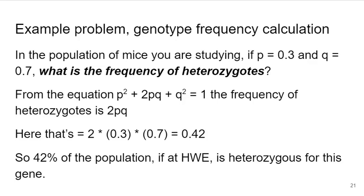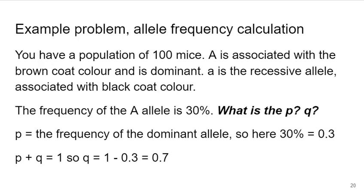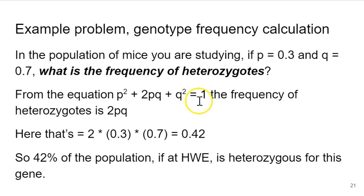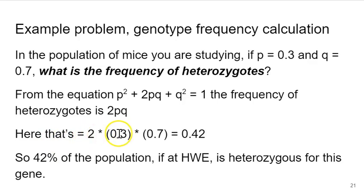Here's another example. Using the same population where P is 0.3 and Q is 0.7, what's the frequency of heterozygotes — big A little a — in that population? Since a heterozygote is a genotype, we use P squared plus 2PQ plus Q squared equals 1. The frequency of heterozygotes is always the 2PQ term. So 2 times 0.3 times 0.7 gives 0.42. In other words, 42% of that population, if it is at Hardy-Weinberg equilibrium, is heterozygous for this gene.